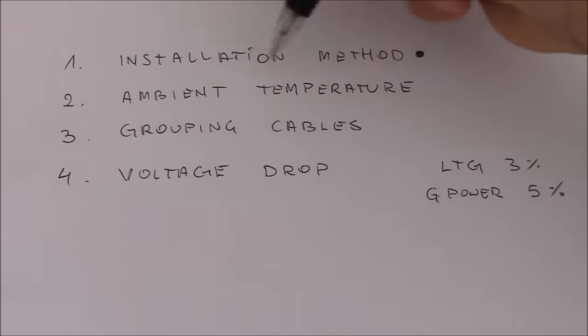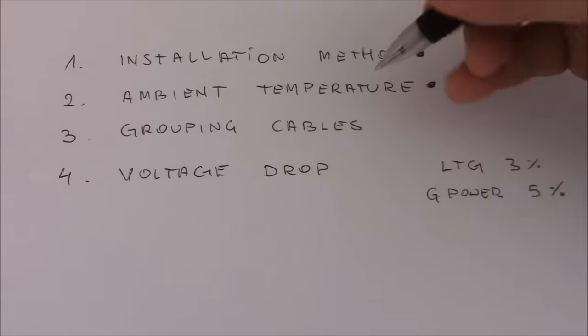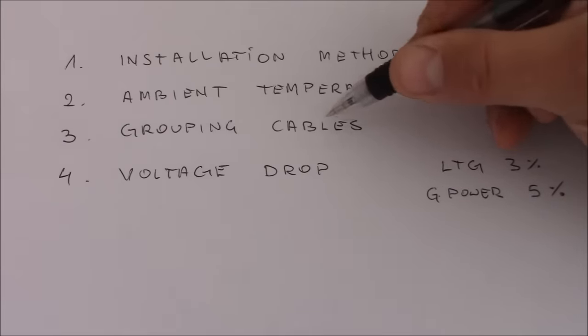Now the ambient temperature. So basically that's the surrounding temperature of the cable. Don't install the cable near boiler or near the radiator pipes as they can be easily overheated. They just cannot dissipate the heat when they're warming up.